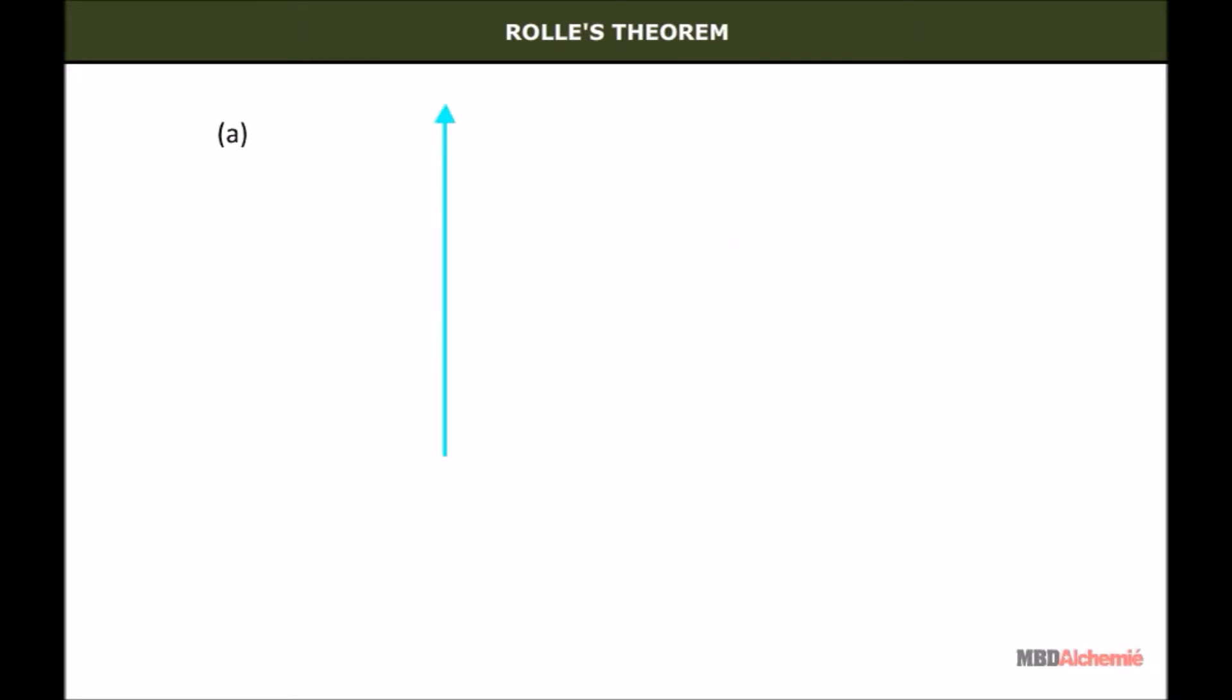Let us take some examples to understand this. For a horizontal line which is parallel to the x-axis, let the points a and b be as shown. As we can see, f(a) = f(b). Then point c can be anywhere between a and b, as it is a straight line.